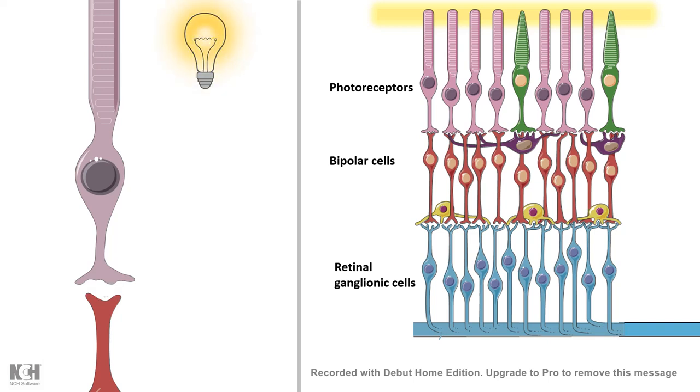But whenever there is light, less neurotransmitter is released from the terminal. Because now we know, whenever there is light, there is activity of the cyclic GMP phosphodiesterase and reduced activity of our cyclic nucleotide-gated channels. And that's why the neuron cannot be in a depolarized state. The neuron, in presence of light, is now in a hyperpolarized state.